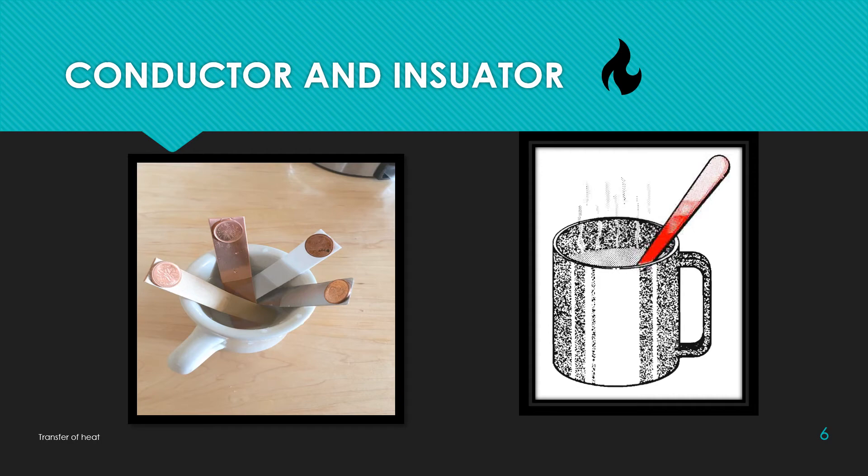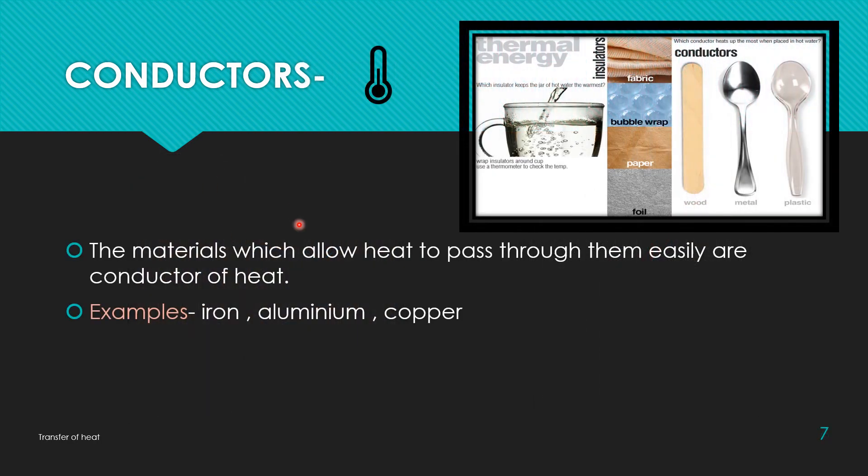So students, from this experiment, we know that the materials which allowed the heat to pass through them easily are the conductors of heat. The materials which easily pass the heat is the conductor of heat. Some examples are like iron, aluminum, copper, like metallic spoon, steel spoon or divider. These are the conductors of heat. In this picture you can see the spoon is conductor of heat means steel spoon not plastic spoon.